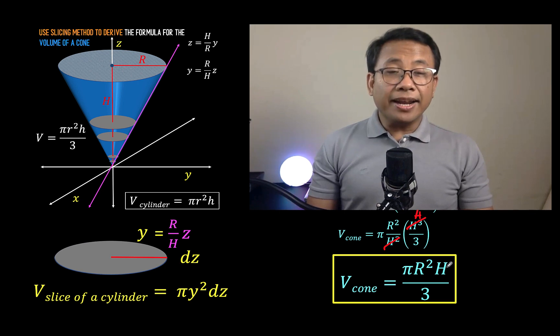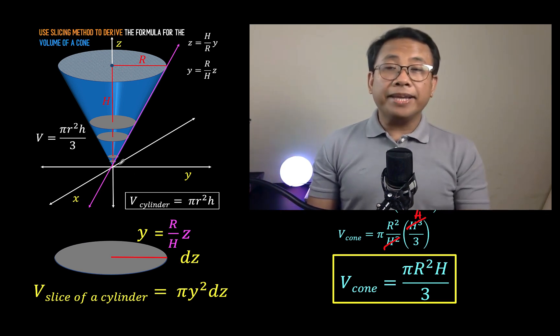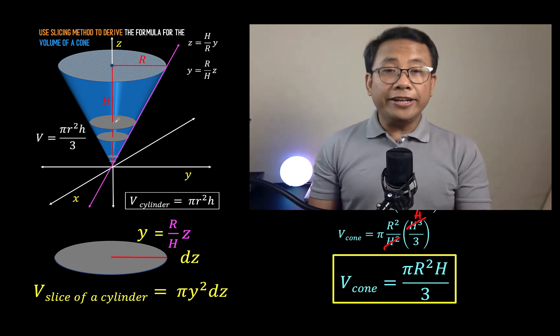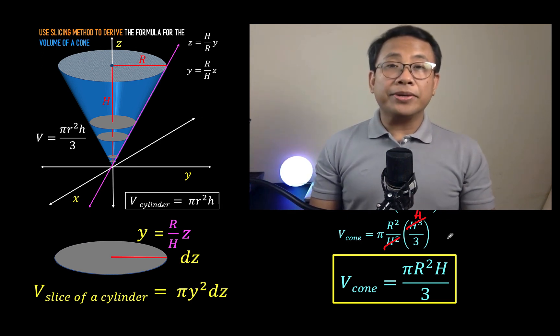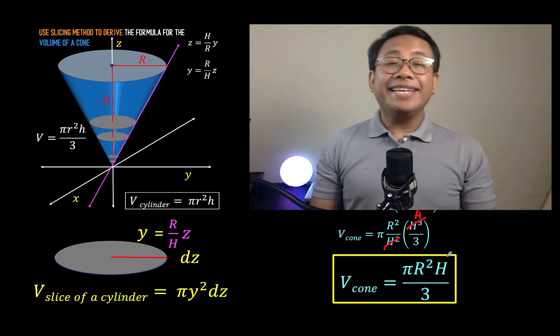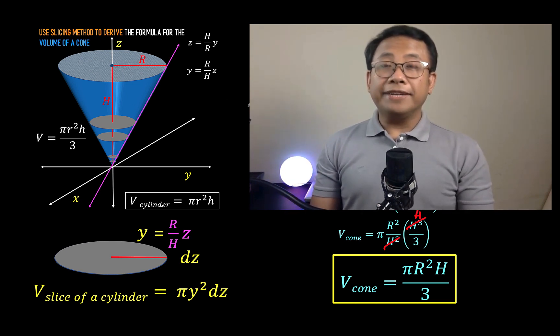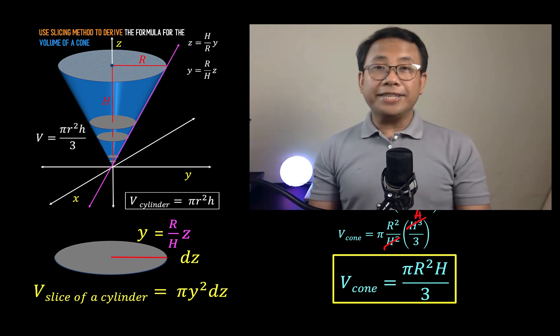And generally, this capital R could be replaced by this small r, and this h can be replaced by this small h. And so we now have the formula for the volume of the cone, and we derive this using the slicing method. And so this is now the answer to our question at the beginning of this video. The formula v equals pi r squared h over 3 is derived using calculus method, using the technique called definite integration. So thank you very much. This is Lando Assistant, and we hope to see you again in our next video.